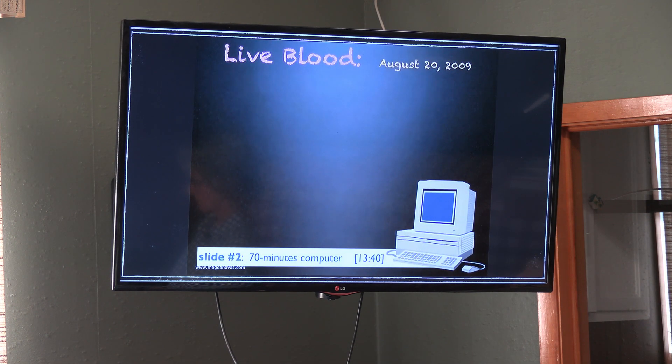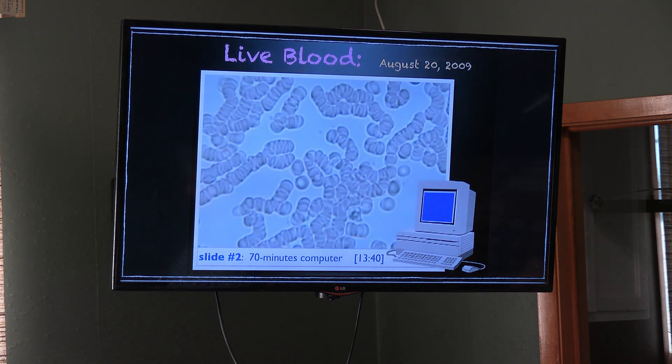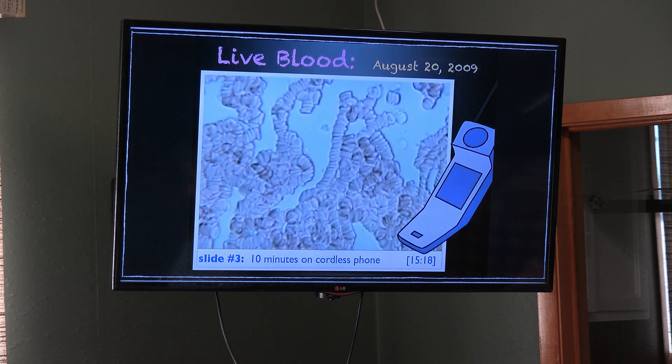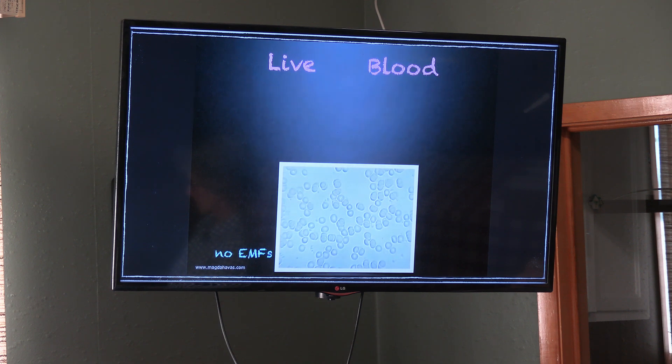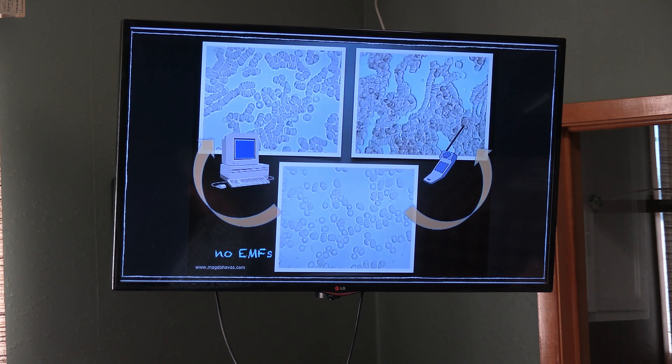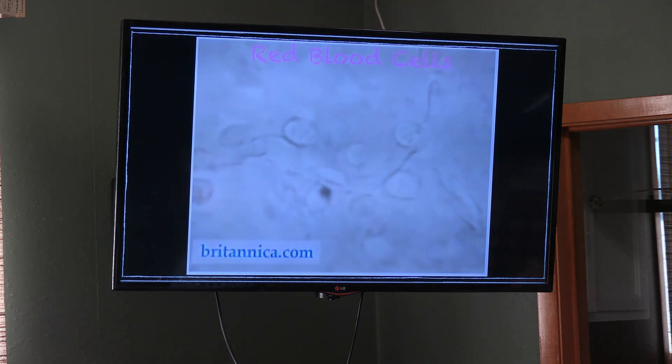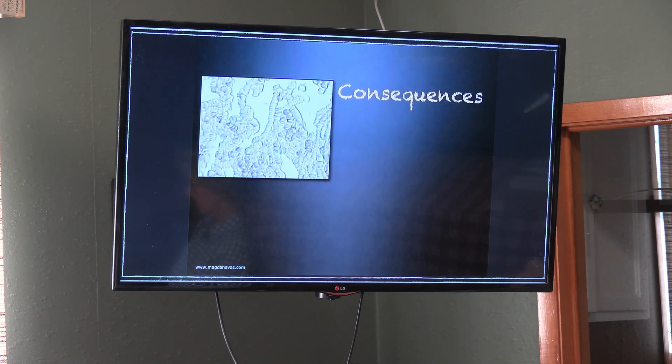I then worked on a computer for 70 minutes and looked at my blood again. This time, the cells are sticking together like stacked coins. This is called rouleau formation. Later that day, I used a cordless phone for 10 minutes and looked at my blood again. And this is what I saw. Very unhealthy looking blood. There are virtually no single cells. Most of the cells are now in rouleau formation. A doctor told me this is what she sees with cancer patients. What I learned is that my blood goes into rouleau formation when I use a computer or a mobile phone. This type of clumping interferes with the release of oxygen and the removal of waste products like carbon dioxide. The capillaries are so narrow that red cells must squeeze through in single file showing the importance of their elasticity.